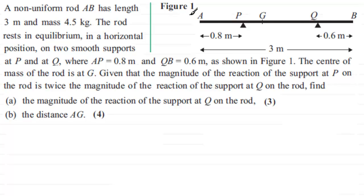The center of mass of the rod is G. Given that the magnitude of the reaction at the support at P on the rod is twice the magnitude of the reaction at the support Q on the rod, we need to find in part A the magnitude of the reaction at the support Q, and then find the distance A to G. What we need to do is add forces to this diagram.